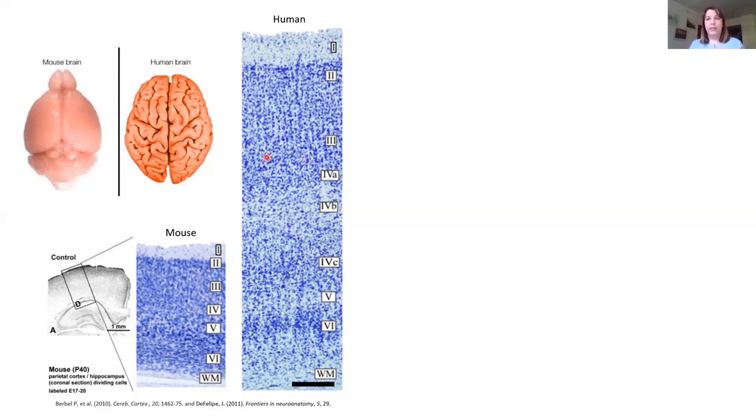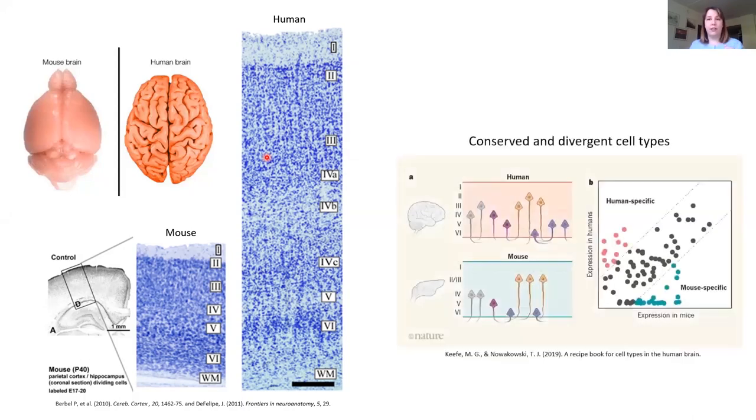But then we can go a step further and genetically characterize these neurons. So if we look at the genetic characterization, what we find is actually that a lot of cells are expressed similarly and in similar layers in the mouse and human. And that's also what we see here on this graph. All these black dots are cells that are expressed in both human and mouse brains. However, you can see that there's a large chunk of cells that are solely expressed in the mouse brain, and also a large chunk that are solely expressed in the human brain.